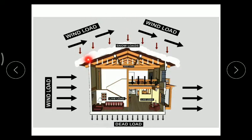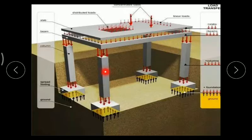The basic loads acting on a frame structure are: dead load, which is the self-weight of members; live load, which are moving loads — for example, students sitting in a classroom; and wind load, which are loads generated due to wind pressure. Load transfer occurs from slab to beam, beam to column, column to foundation, and the total load is applied on the hard soil strata.